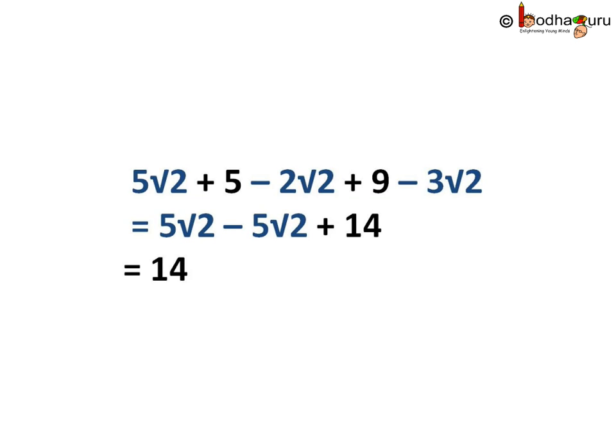Let's take an example: 5√2 + 5 − 2√2 + 9 − 3√2. To make it simple, think of √2 as x — you cannot touch it, we don't know its value, so you add and subtract the coefficients only. So 5x − 2x − 3x equals 0, meaning 5√2 − 2√2 − 3√2 is also 0. What remains is 5 + 9, which equals 14 — a rational number. In this case we got a rational number because all the irrational terms got cancelled. That's all for now, bye bye!